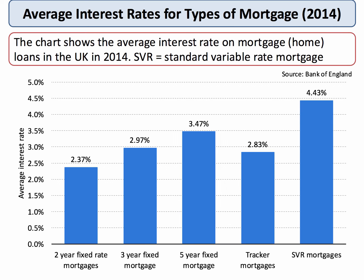Here's a chart showing the average interest rates for different types of mortgage in 2014. SVR stands for standard variable rate mortgage. Interest rates in the housing market are pretty low at the moment — less than five percent — and a two-year fixed rate can be had for just under 2.5 percent. However, keep in mind that the big issue for many people is saving enough money to get a deposit on a mortgage; if you can do that, home loans are fairly cheap at the moment.